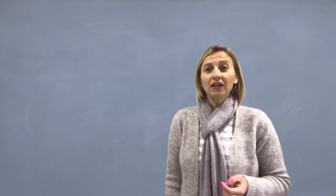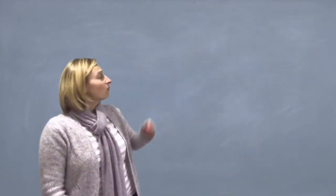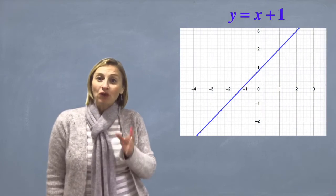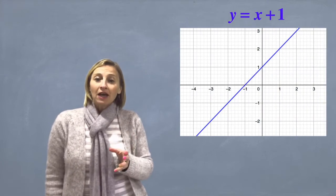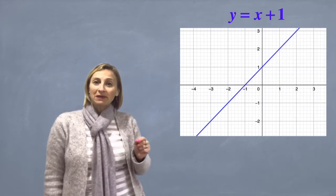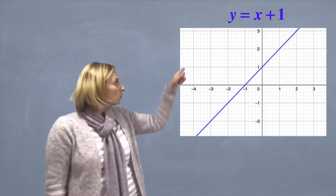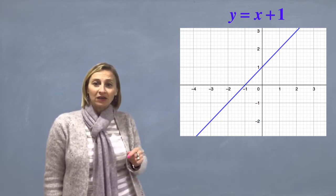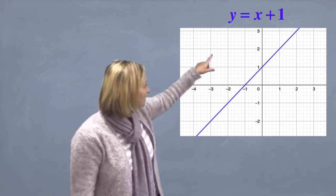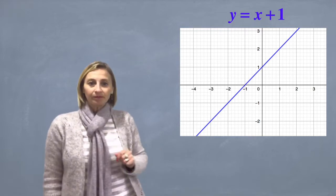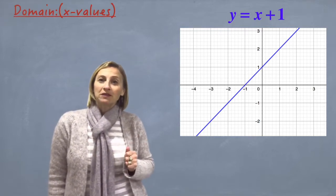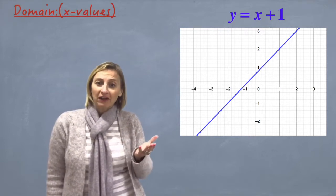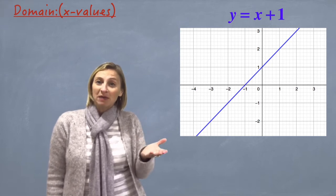Let's have a look at an example. Let's take y equals x plus 1. You should know that that's a straight line, and when you have a straight line y equals mx plus b, it goes through 1 on the y-axis and it's a positive gradient. Let's think about what the domain is — what are the possible x values? What can x actually be?